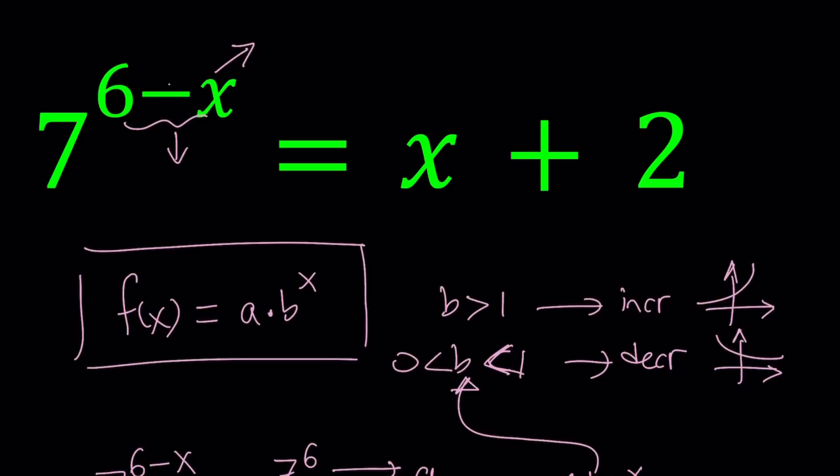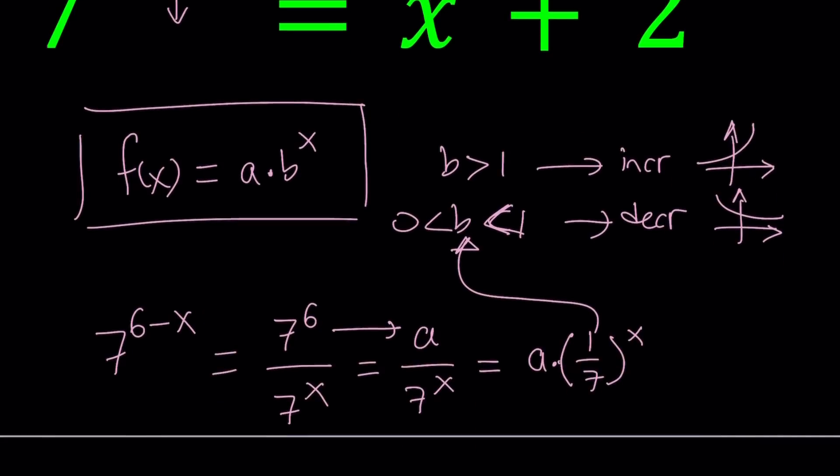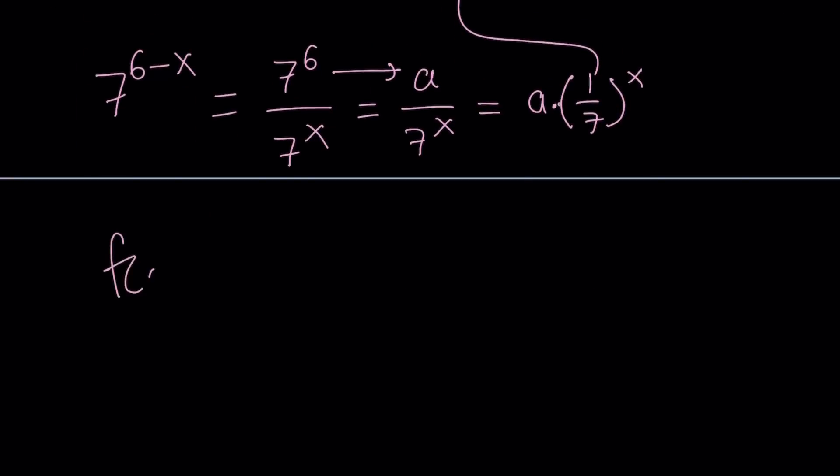But let's go ahead and look at it from a calculus derivative perspective. We have 7 to the power, let's call it f of x, and then differentiate it. Now, how do you differentiate a to the power u?